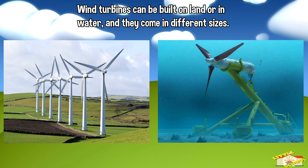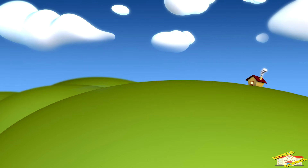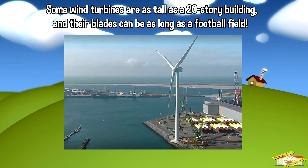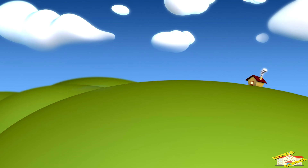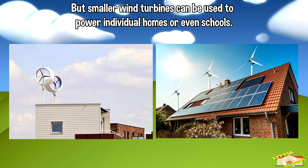Wind turbines can be built on land or in water, and they come in different sizes. Some wind turbines are as tall as a 20-story building, and their blades can be as long as a football field. But smaller wind turbines can be used to power individual homes or even schools.